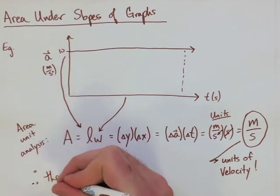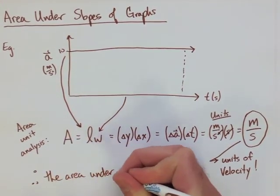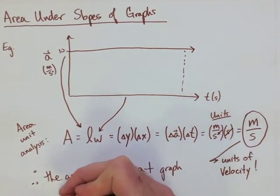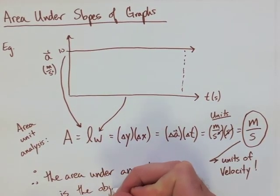So, the area under the graph, or under the slope, of an acceleration-time graph works out to be the velocity of the object we're dealing with.